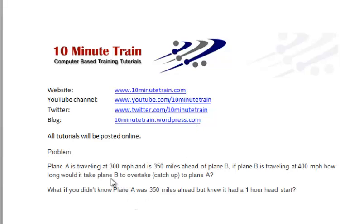So what we're going to do, we're going to do this problem here. Plane A is traveling at 300 miles per hour and is 350 miles ahead of plane B, but plane B is traveling at 400 miles per hour. How long would it take plane B to overtake or to catch up to plane A?